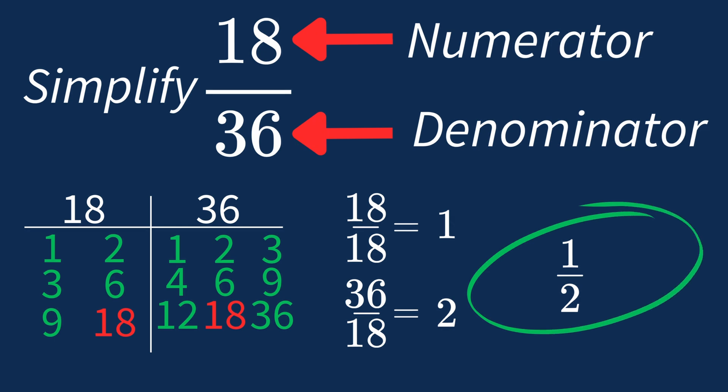And we know that 1 over 2 is in its simplest form, because the only common factor between 1 and 2 is 1. And when 1 is the largest common factor, we know that our fraction has been simplified.